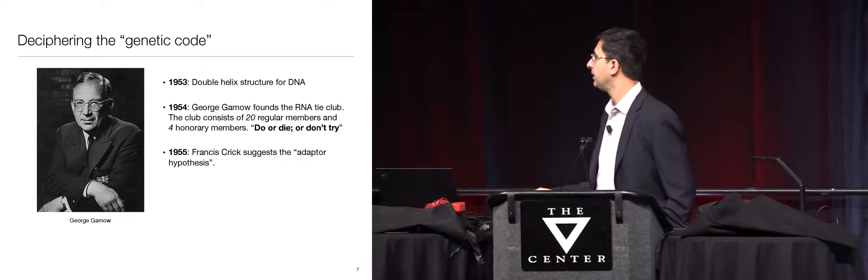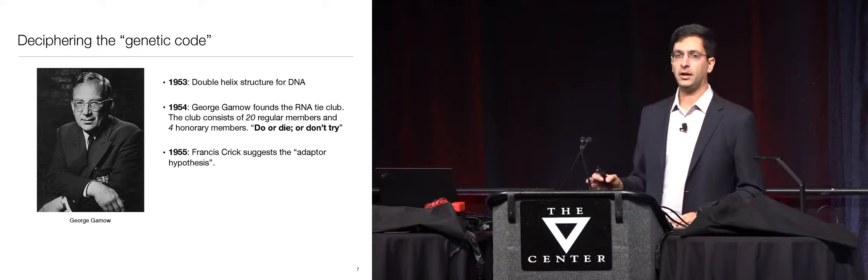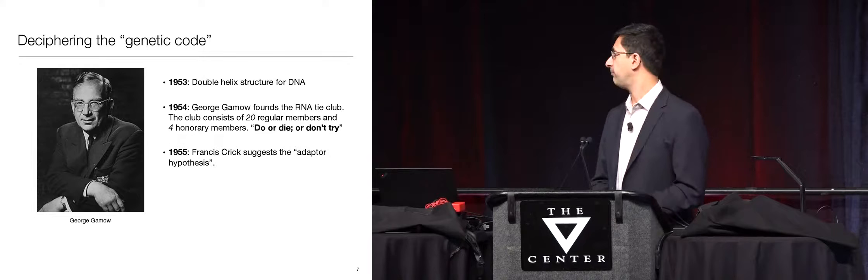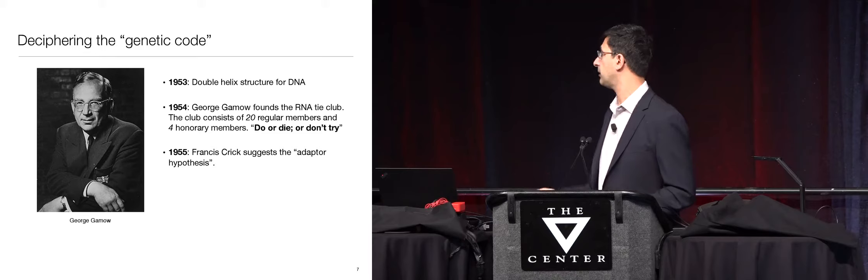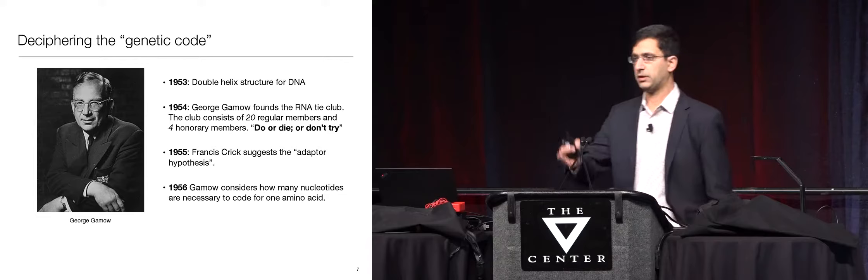Francis Crick himself was a member of the society and had a notion that there were some kind of adapters that did this translation. The society was about half biologists and half physicists and mathematicians — people like Metropolis from the Metropolis-Hastings algorithm, Dick Feynman, and Gamow. So all these famous people each had their own theory. But Gamow himself, together with Crick, had a personal vested interest in solving this problem.